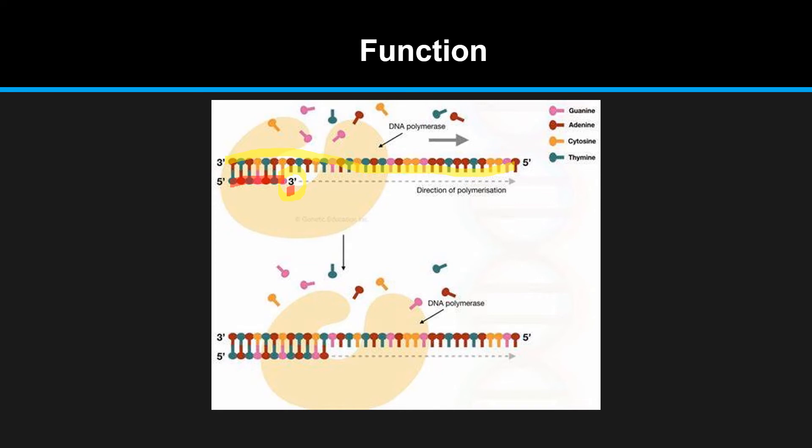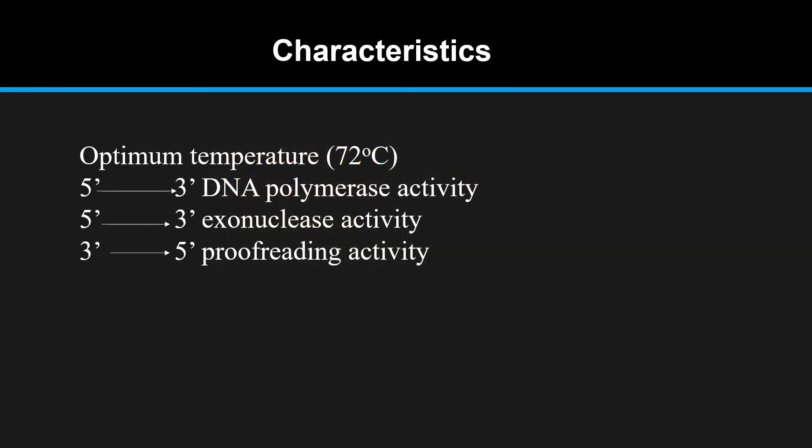Some of the characteristics: it can survive at high temperature. Usually, if somebody has performed PCR reaction in their research work, they might be familiar that in this reaction, the temperature is 72, 98 for denaturation, and all that. The temperature is high. So this TAQ polymerase can work at a high temperature. That is why we use TAQ polymerase in PCR reactions.